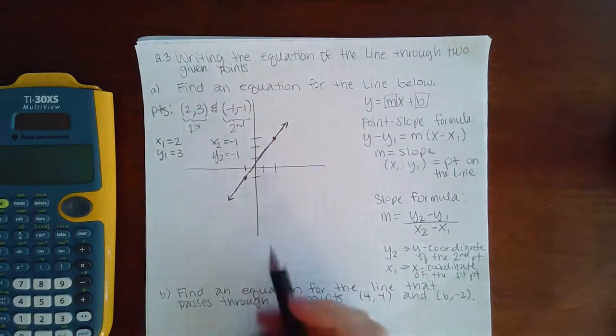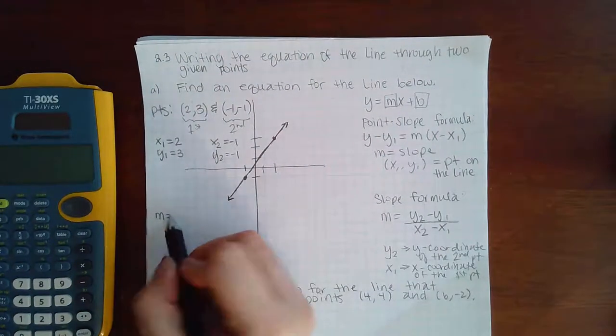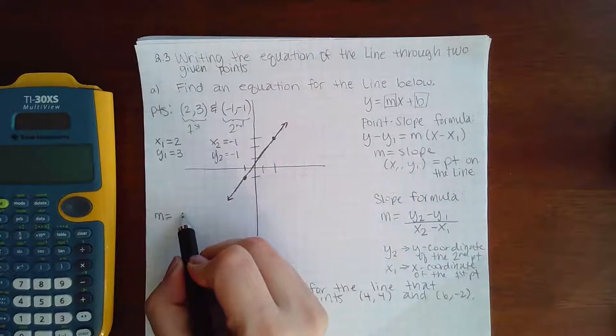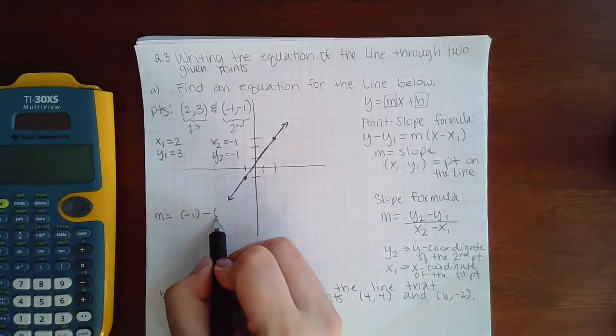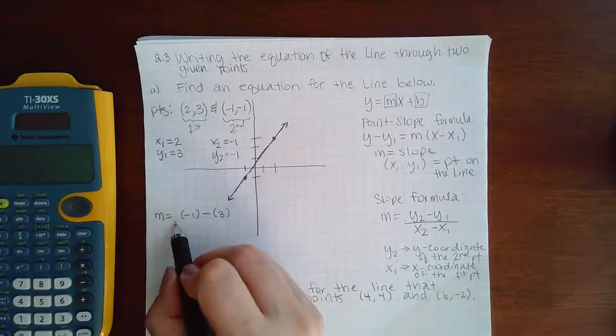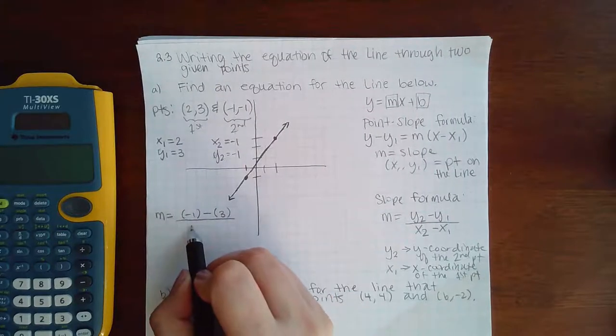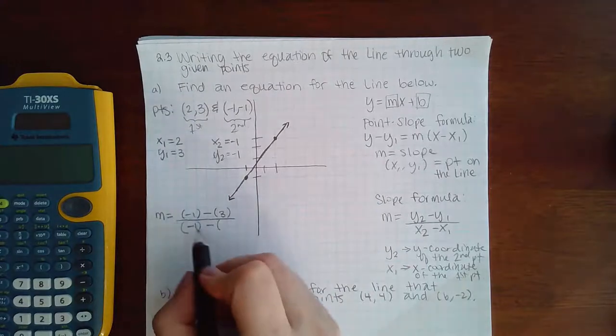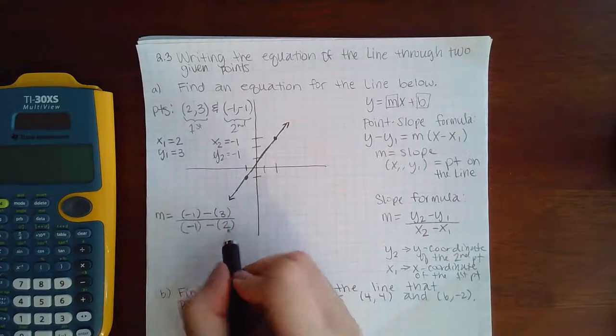And so then now I can calculate my slope. That would be y2 first, right? Y2, which is negative 1, minus y1, which is 3, over x2, which is negative 1, minus x1, which is 2.